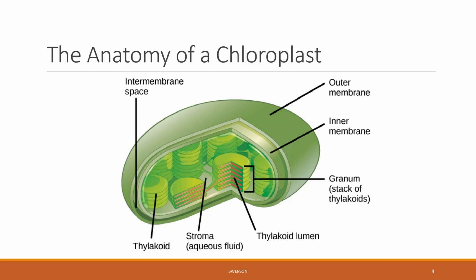The chloroplasts have evolved a complex membrane system to optimize their capacity to photosynthesize. Just like mitochondria, the chloroplast has an outer membrane, an intermembrane space, and an inner membrane. The inner cell floats in a solution called the stroma, similar to the mitochondrial matrix. However, chloroplasts do not contain cristae; instead they have membranes inside called thylakoids. These thylakoids are stacked into structures called grana. Each granum is filled with its own aqueous solution, and the grana are where most of the action happens in photosynthesis.